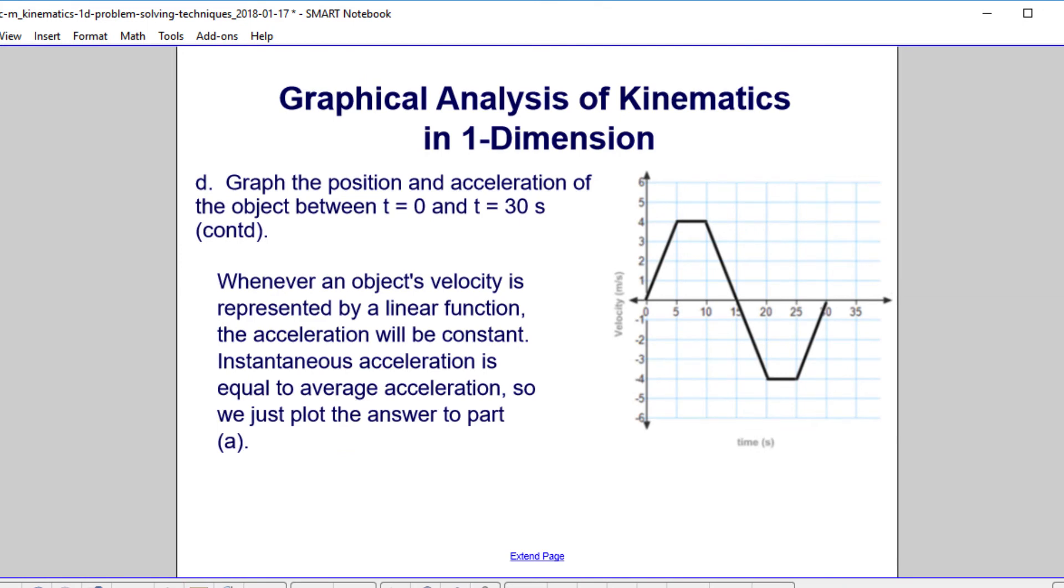Your reward for calculating the position graph is to do the acceleration graph, which is much simpler. So actually, if you had this on an exam, do the acceleration first. It's always easier to graph the derivative of something than to go through the integral. And let's note that whenever an object's velocity is represented by a linear function, like v equals 3t, the acceleration will be constant. The derivative of 3t is just 3. Instantaneous acceleration, therefore, is equal to average acceleration. So basically, we're plotting the answer that we had for part a.